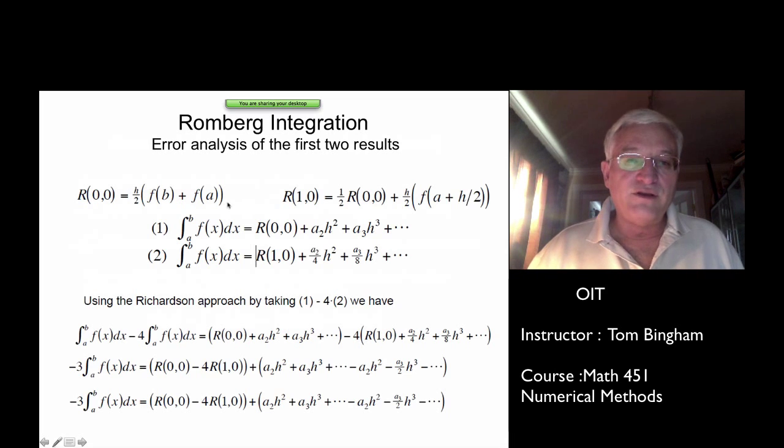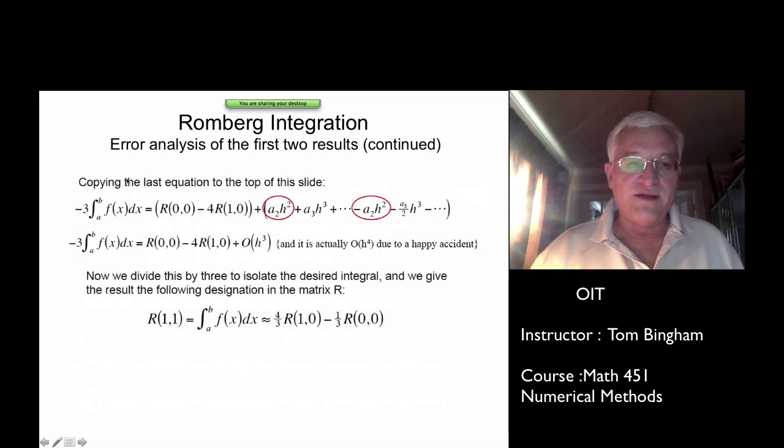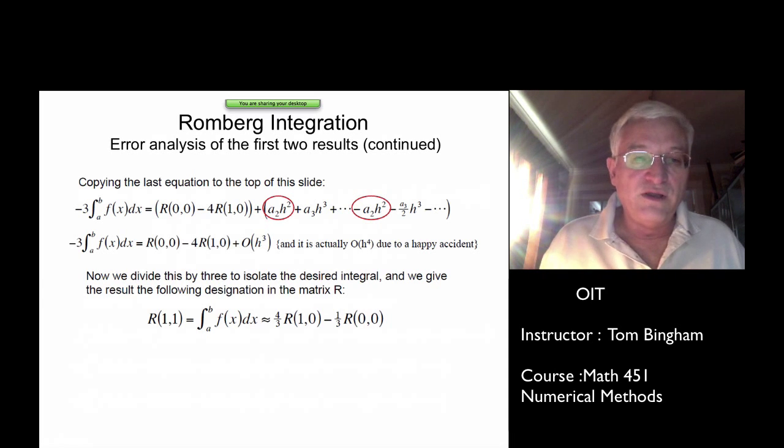There's no reason why we couldn't have done exactly the same thing in a third row. We could have used our standard trapezoidal recursive rule to get an R(2,0). So build yet one more value in that first column. If we did that, then we would have another two values to work with, and we could apply the same idea, except instead of using R(1,0) and R(0,0), we could use R(2,0) and R(1,0) in the same manner. We could merrily go down and continue to add values in the first column and the second column of this R matrix.